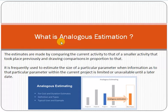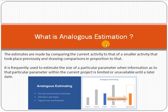Let's look at these two terms: analogous and estimation. Estimation is very important in project management. As a project manager, you have to do estimations for scope, time, and cost. Analogous estimation can be used in all three aspects — cost, scope, and schedule.